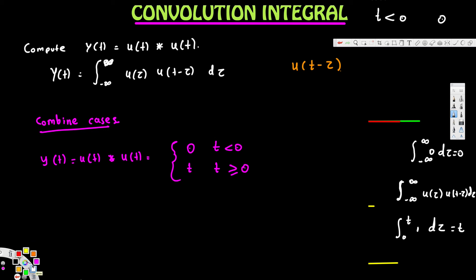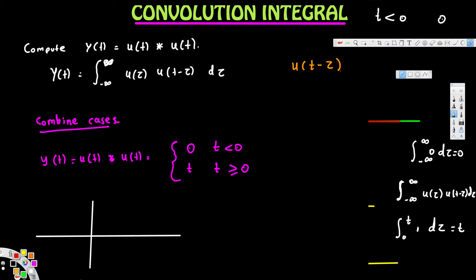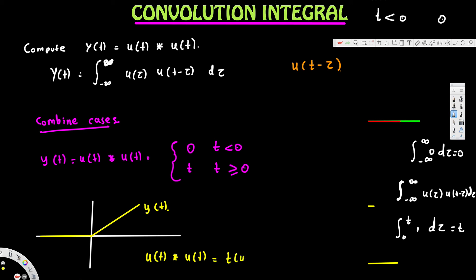If we express this in terms of a graph, before t equals 0 it is 0, and when t is greater than 0 it grows linearly — that is a ramp function. We can also express this compactly as u(t) convolved with u(t) equals t times u(t). That is the final solution. When u(t) is convolved with u(t), we get t times u(t).